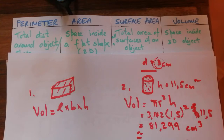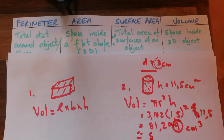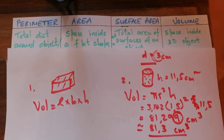If asked to round to two decimal places, look at the third digit. Because it is 5 or above, the 9 goes up one position, giving a final answer of 81.30 cm³.